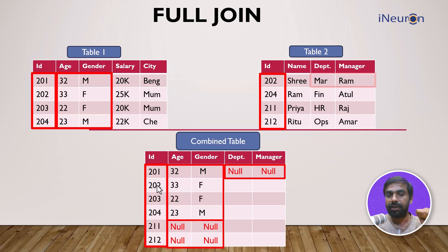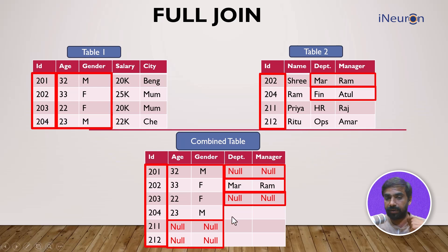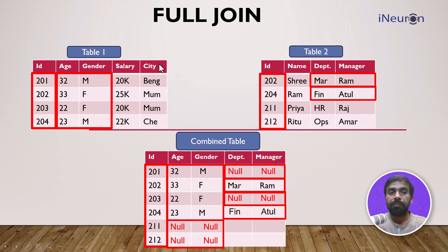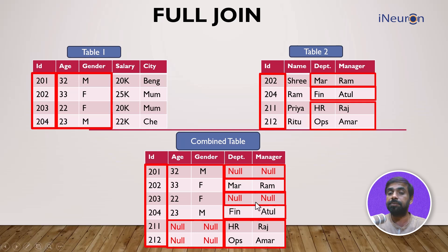For 201, age and gender were present in table one so those are reflected, but department and manager are NULL because 201 isn't in table two. 202, being a common row, has both age and gender data and department and manager data — fully reflected. 203 will have NULL values for department and manager since it's not in table two. 204 is present in both tables, so finance and Atul get reflected. 211 and 212 are in table two, so their department and manager data — Achar, Raj, Amar — comes through. That's how the combined table is completed, with some NULL values where data is missing.